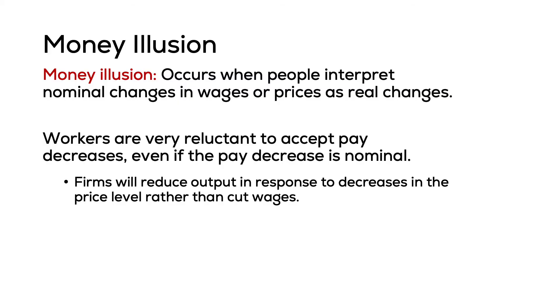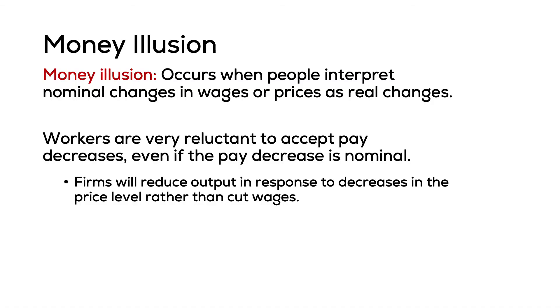Money illusion occurs when people interpret nominal changes in wages or prices as real changes. Workers are very reluctant to accept pay decreases even when the decrease is only nominal. If the price level in the economy falls, wages should fall too, but money illusion causes wage prices to be sticky — employees are reluctant to reduce their wages, so firms respond by reducing their output to minimize losses. On the other hand, if price levels increase, firms will be reluctant to increase wages and therefore will be able to increase profits by increasing quantities supplied.